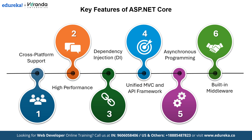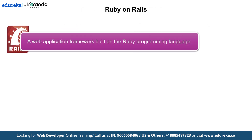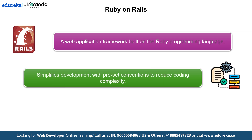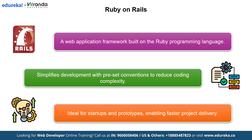Now let's shift our focus to another popular web framework: Ruby on Rails. Ruby on Rails is a web application framework built on the Ruby programming language. It is known for its clean and simple structure, allowing developers to build web applications quickly and efficiently. It simplifies development by using preset conventions to reduce coding complexity, so developers can focus on building the application without spending too much time configuring or writing repetitive code. Ruby on Rails is ideal for startups and prototypes, enabling faster project delivery.